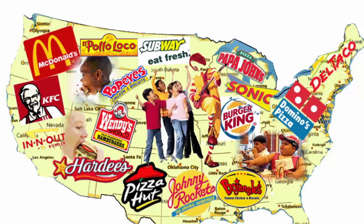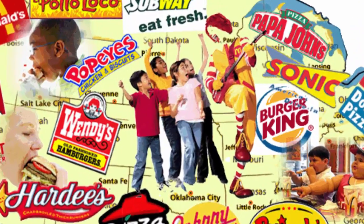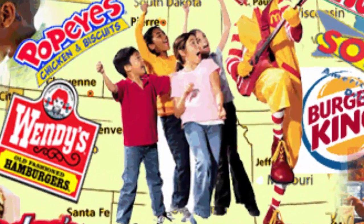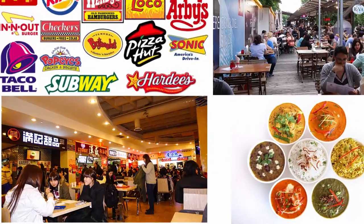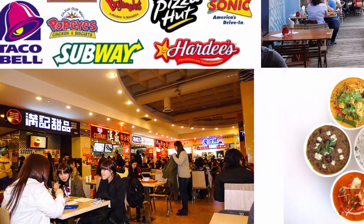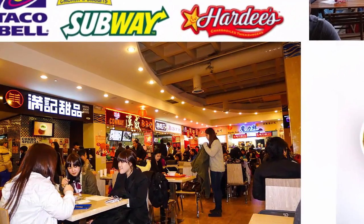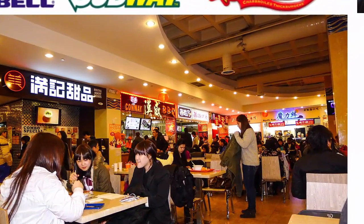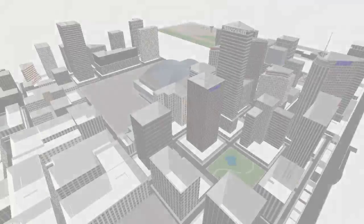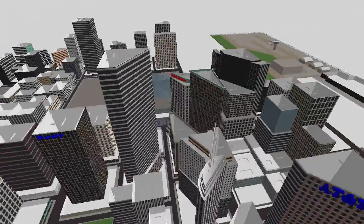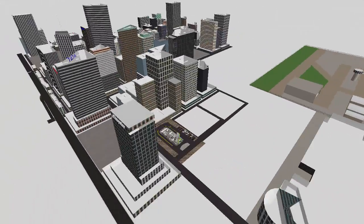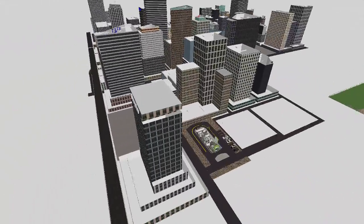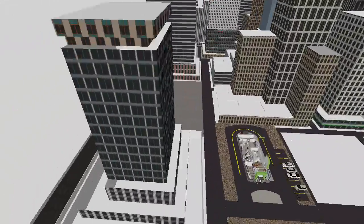It's no secret that Americans love fast food. Fast food restaurants have spread across the globe, and emerging markets are one of the fastest growing areas in the industry. In this video, you're seeing a demonstration of a simulation model of a fast food restaurant.